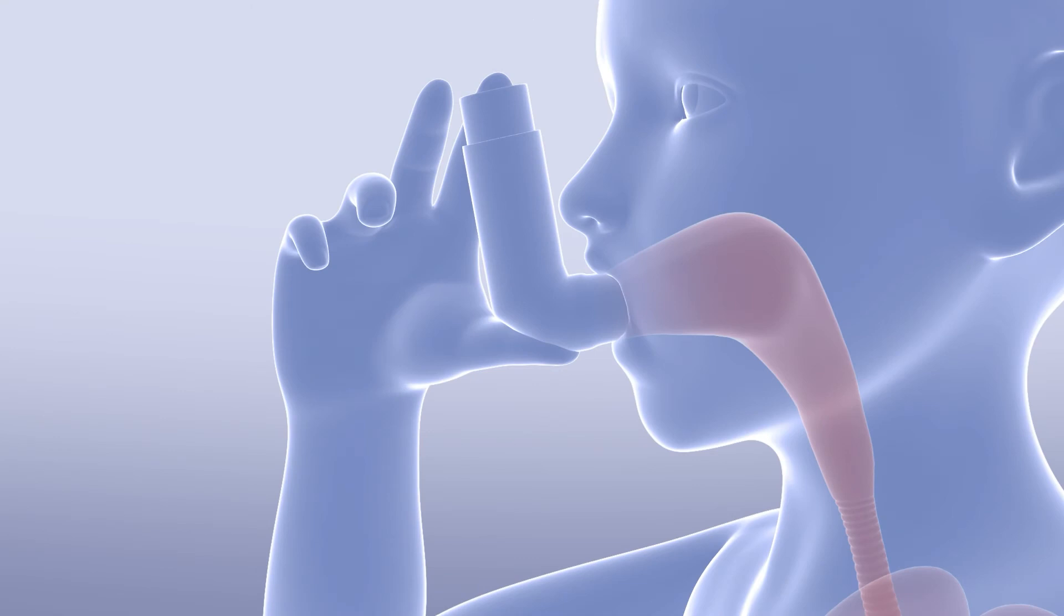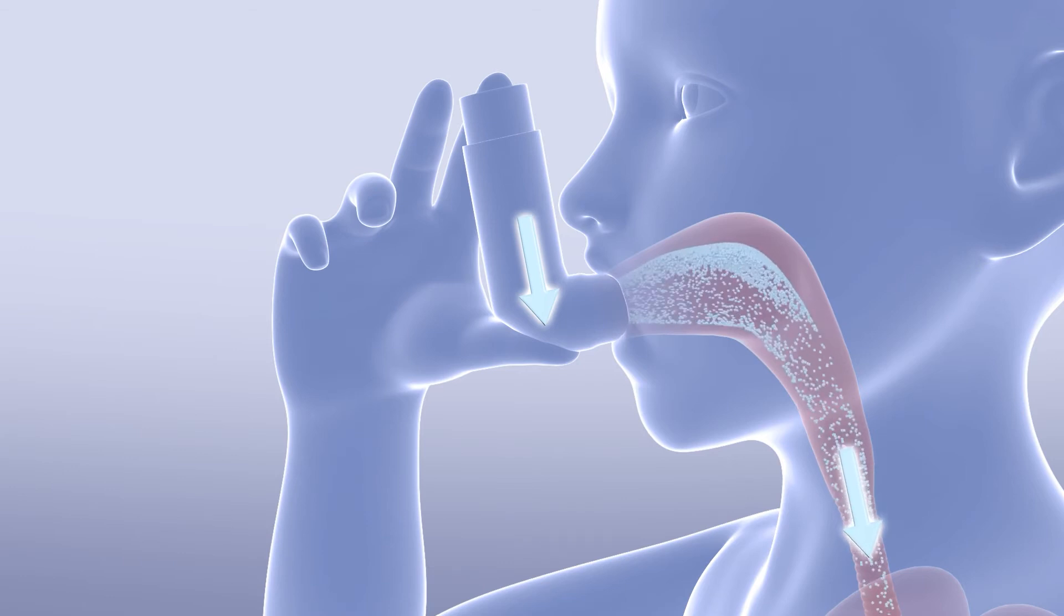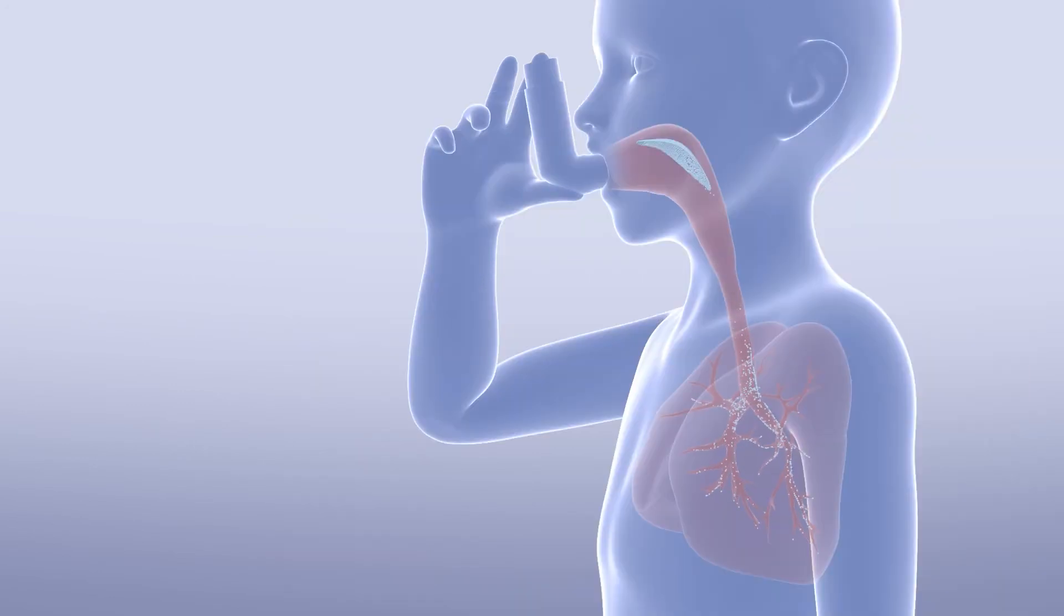When used without a holding chamber or spacer, an inhaler works on the principle of press and breathe in. In other words, you must breathe in at exactly the same time as you press the spray. This kind of coordination is often difficult, particularly for children and the elderly. If it's not properly performed, a lot of medication can be lost on the way to the lungs.